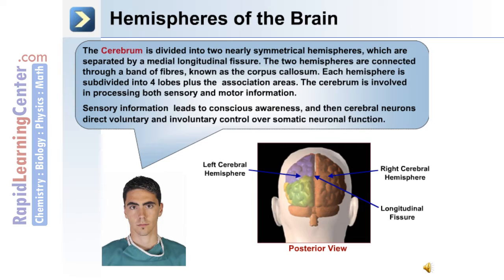Each hemisphere is subdivided into four lobes plus the association areas. The cerebrum is involved in processing both sensory and motor information. Sensory information leads to conscious awareness, and then cerebral neurons direct voluntary and involuntary control over somatic neuronal function.